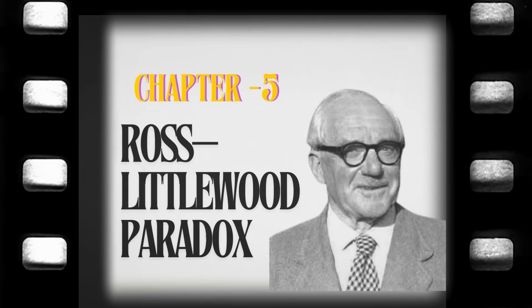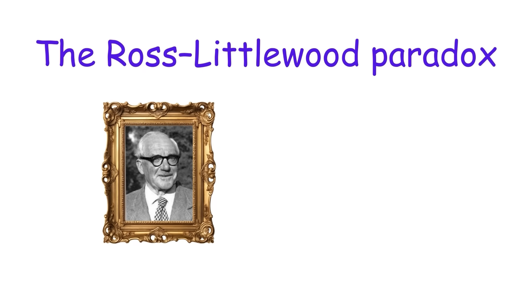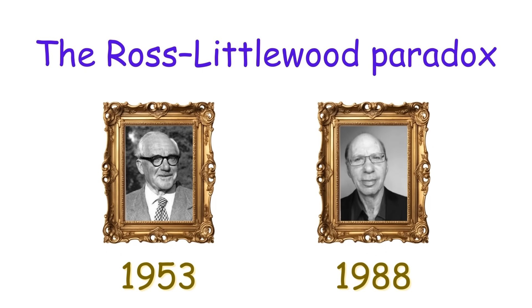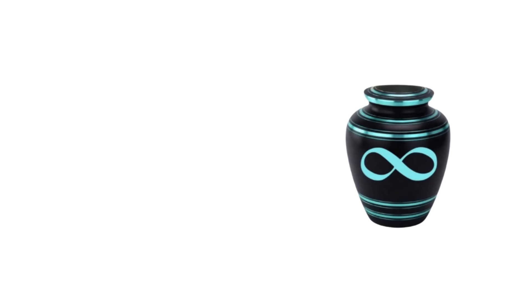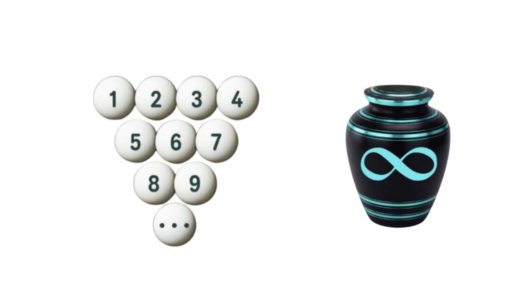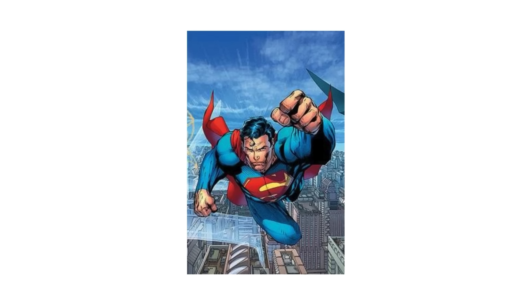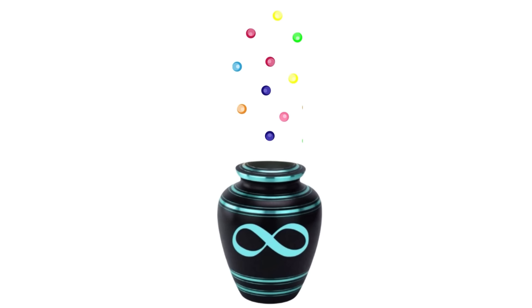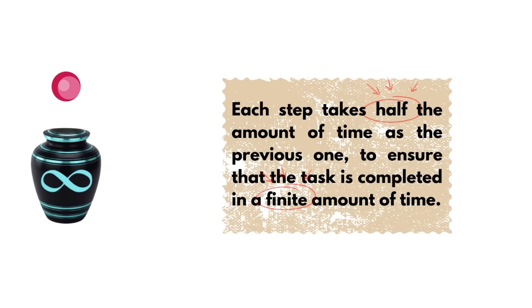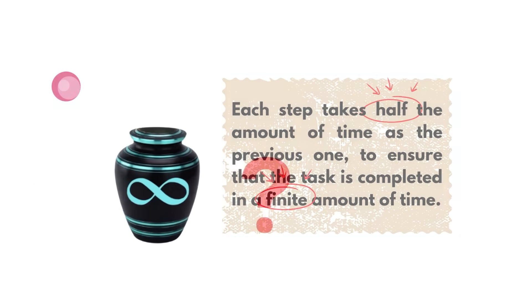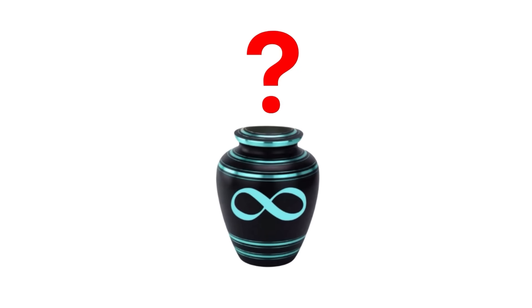Ross-Littlewood Paradox. The Ross-Littlewood Paradox invented by John E. Littlewood in 1953 and further explored by Sheldon Ross in 1988 involves an infinitely large empty vase and an infinite amount of balls. A supertask is performed. At each step, 10 balls are put in the vase, and then one ball is taken out. Each step takes half the amount of time as the previous one to ensure that the task is completed in a finite amount of time. Now at the end, how many balls does the vase contain?